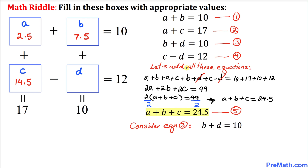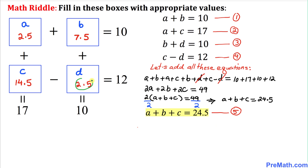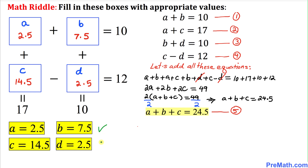Finally, consider equation 3: B plus D equals 10. We know B is 7.5, so replacing B gives 7.5 plus D equals 10. Moving 7.5 to the right-hand side: D equals 10 minus 7.5, so D equals 2.5. Our final values are A equals 2.5, B equals 7.5, C equals 14.5, and D equals 2.5. Thanks for watching — please subscribe for more videos!